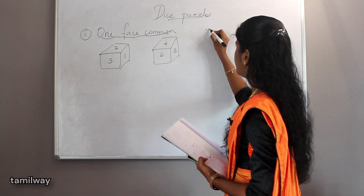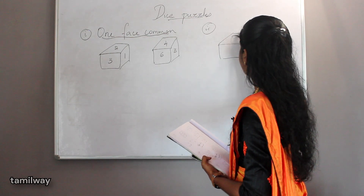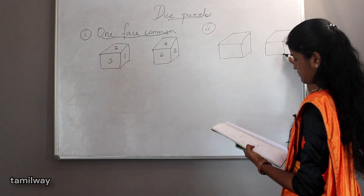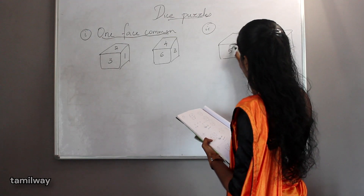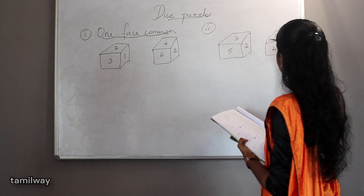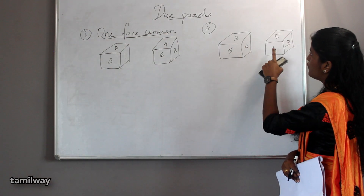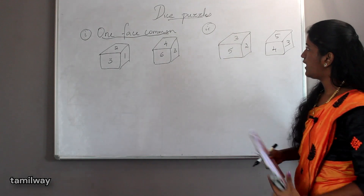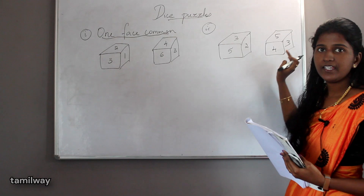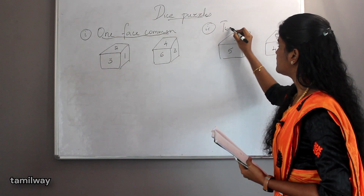The second trick is: check the other side. Here we have five, three, two, four, five, three. If you look here — five, three, two, four, five, three — five appears in both, three appears in both. Here we have two sides common.